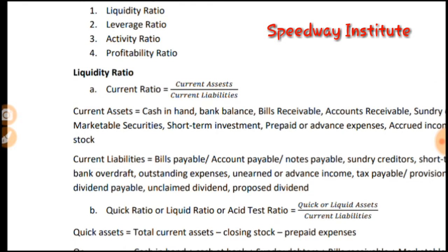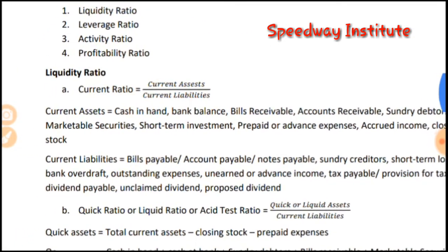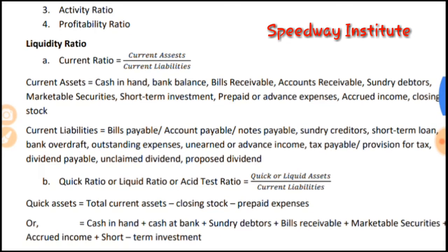Current ratio is called current assets divided by current liabilities. Current assets include: cash in hand, cash at bank, bank balance, bills receivable, accounts receivable, sundry debtors, marketable securities, short-term loan, short-term investment, prepaid or advanced expenses, accrued income, and closing stock.